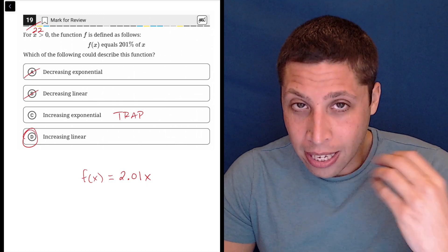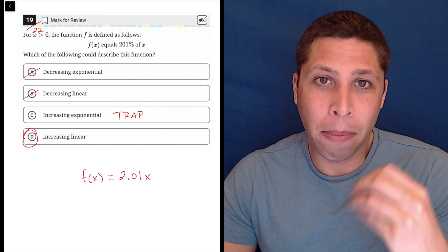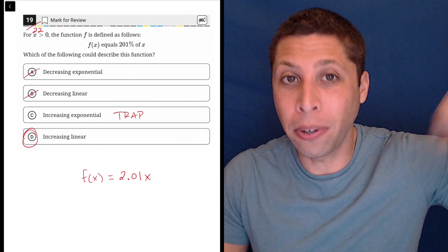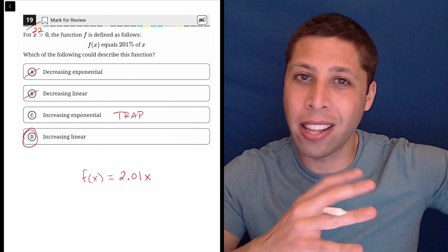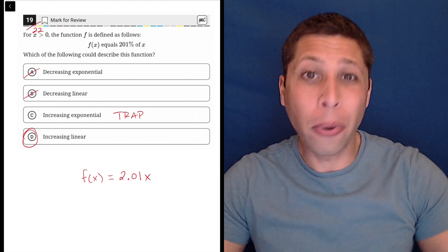I guess the key piece is it's not increasing by 201% of the previous x's value. There's none of that. This is not, there's no way to put an exponent here.